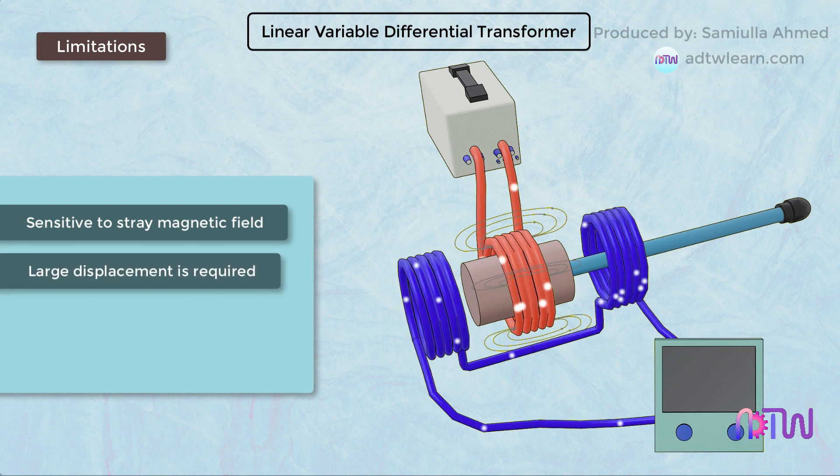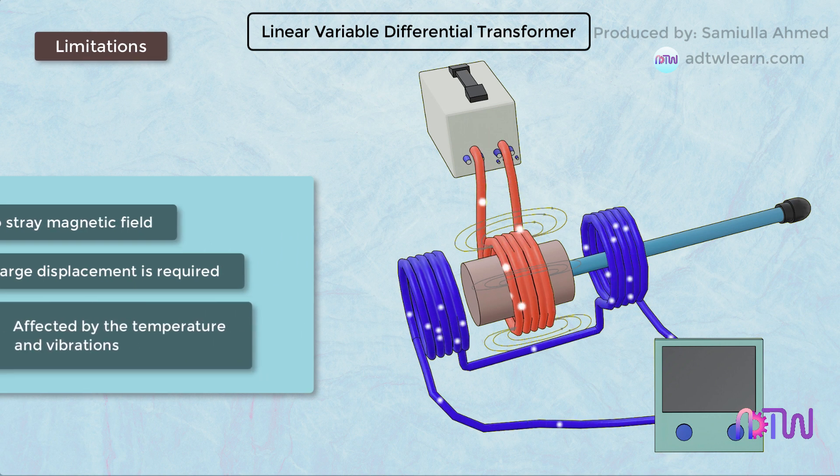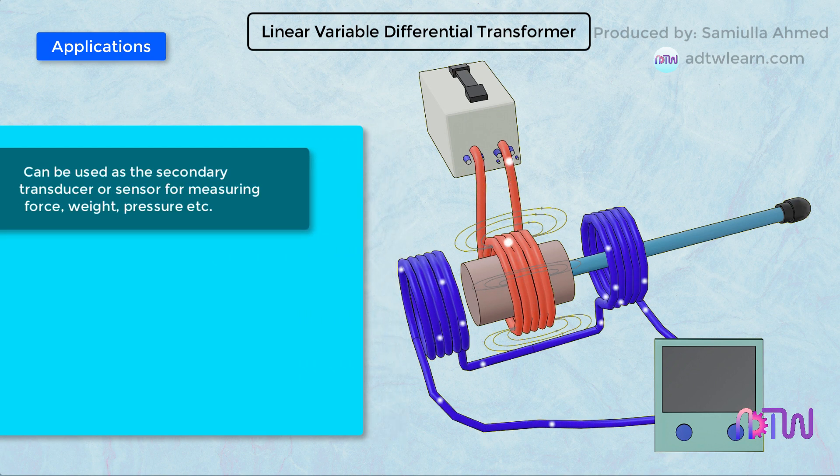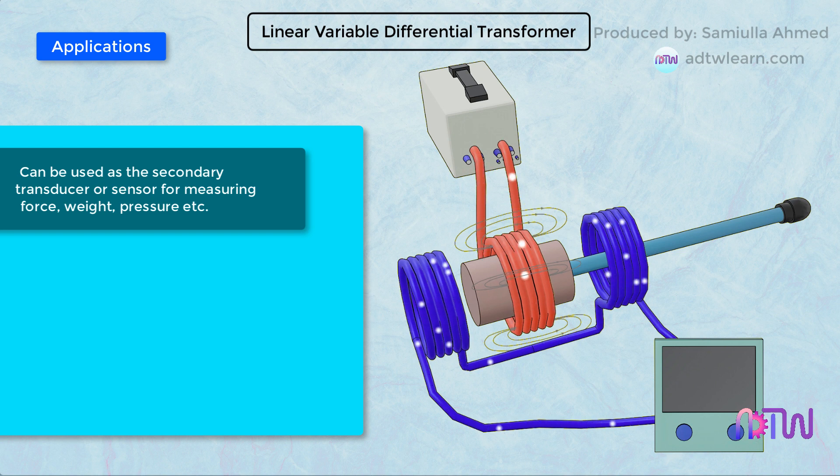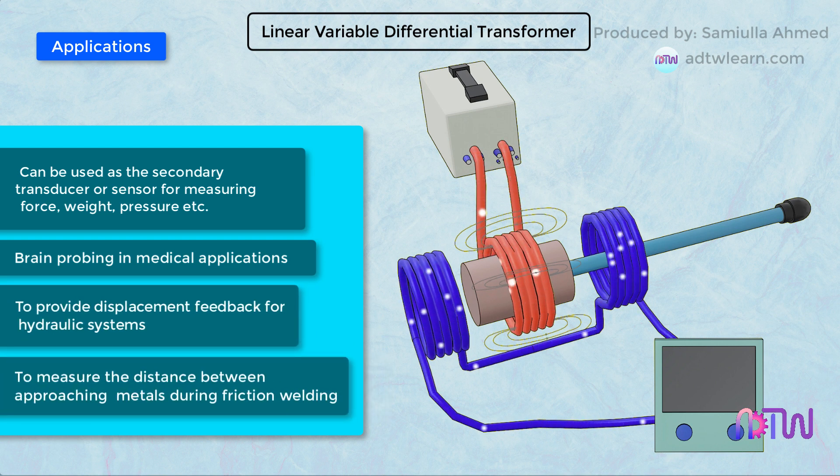Large displacement is required for producing appreciable differential output. It is affected by temperature and vibrations. Applications: LVDT can be used as a secondary transducer or sensor for measuring force, weight, pressure, etc.; brain probing in medical applications; to provide displacement feedback for hydraulic systems; to measure the distance between approaching metals during friction welding.